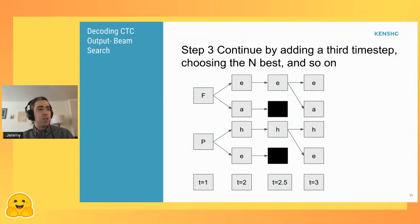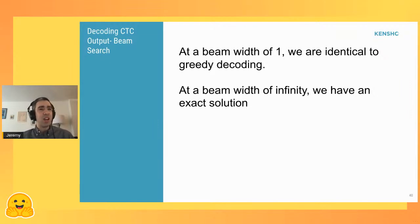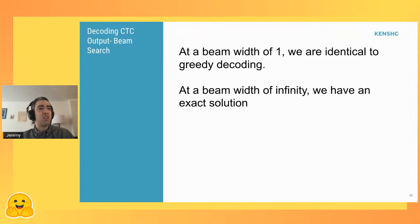We're iteratively building paths through a logit matrix, keeping only the highest-weighted ones at each step. This interpolates between the two extremes: at a beam width of one we just keep the highest weighted character at each step — essentially identical to greedy decoding, perhaps including a language model. At a beam width of infinity, where you include all possible paths, you hopefully end up with an exact solution. You can optimize by choosing your beam width to give good results while being fast enough for your speech-to-text system.